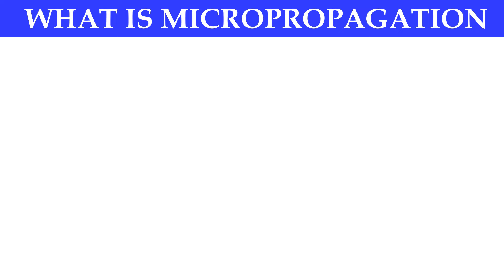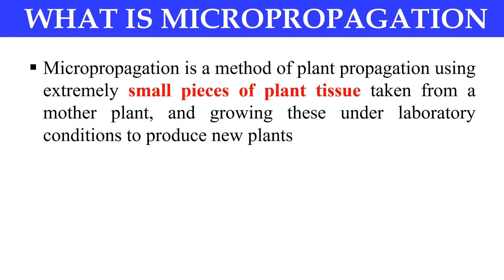First of all, what is micropropagation? Here, as the name indicates — micro plus propagation — micro means something small. So micropropagation is a method in which a very small piece of plant tissue, that is an explant, is allowed to propagate in an artificial medium, that is in nutrient media. This is micropropagation where a very small piece of plant is allowed to propagate or grow in the laboratory with proper optimized conditions and giving the proper nutrients to that small piece of plant.